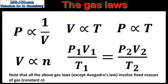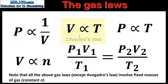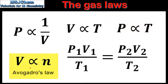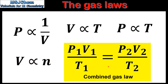In this video I'll be looking at the following gas laws. The first is the relationship between pressure and volume at constant temperature, also known as Boyle's law. Next is the relationship between volume and temperature at constant pressure, also known as Charles' law. We'll also look at the relationship between pressure and temperature at constant volume, also known as Gay-Lussac's law. After that, the relationship between volume and amount in moles at constant temperature and pressure, also known as Avogadro's law. And finally, the combined gas law.